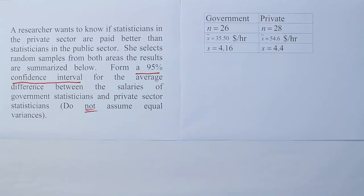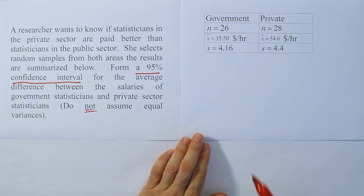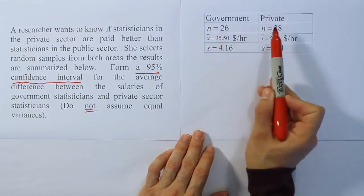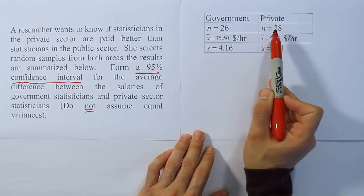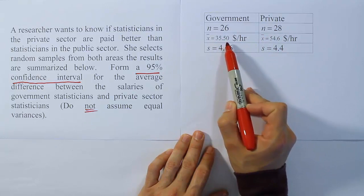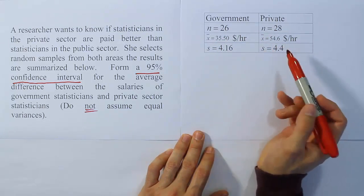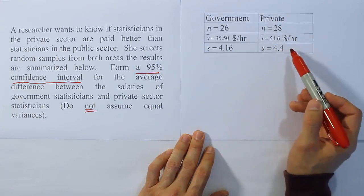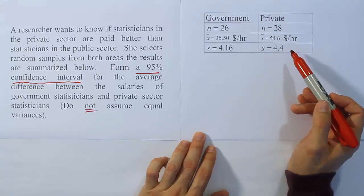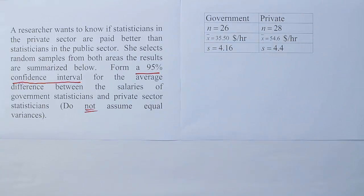In this problem we have to work with a very special formula to help us calculate the degrees of freedom. Let's look at the data. The reason why I mention we need degrees of freedom is the sample sizes are small. n is 26, n is 28. We have x-bar 35.5, 54.6, standard deviation 4.6, 4.4 for the private sector.